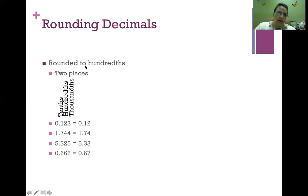When we're rounding from 3 places to 2 places, we have 0.123. 3 is less than 5, so we round down to 0.12. This number, 1.744—4 is less than 5, so we round down to 1.74. We just drop that second 4. This example, 5.325—5 or above, we go up, so it becomes 5.33. The last example, 0.666. This 6 is greater than 5, so the number becomes 0.67. We round up.